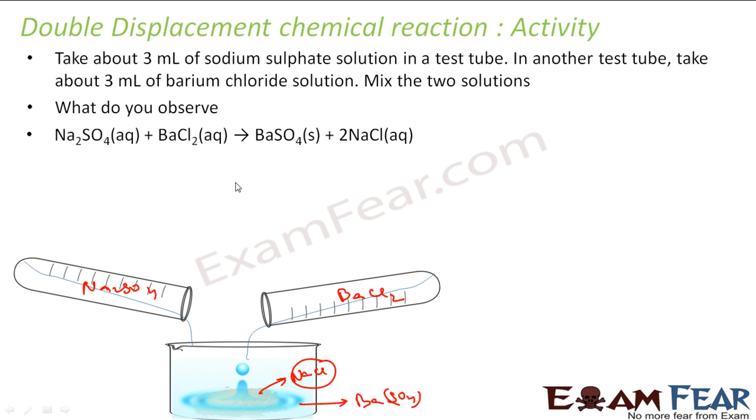And this is the reaction that happens. Na2SO4 plus BaCl2 gives BaSO4 plus NaCl. In this case if you see, sodium and chlorine, they form a pair. They got NaCl. And the sulfate and barium form a pair called barium sulfate. And that is what happened. So this is one of the activities to observe this double displacement chemical reaction.